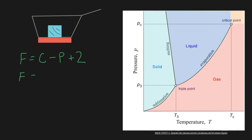So F equals the number of intensive variables we must define. We just have water — solid water right now — so C equals 1: just one component, H₂O. We also have just one phase: ice. So 1 component minus 1 phase plus our constant 2. F equals 1 minus 1 is 0, plus 2 — F equals 2. We need to define two variables to figure out the state of the system.